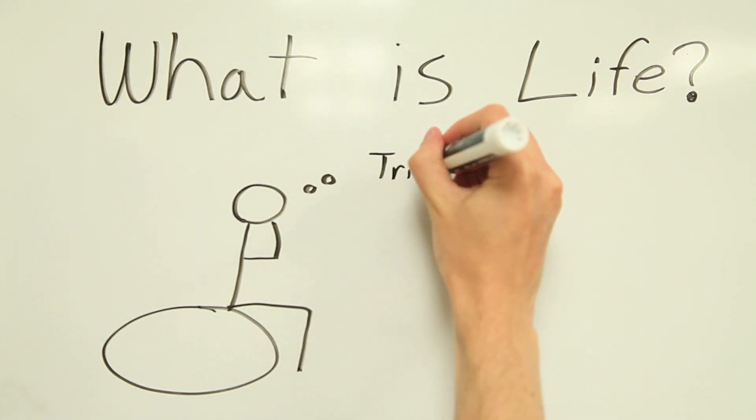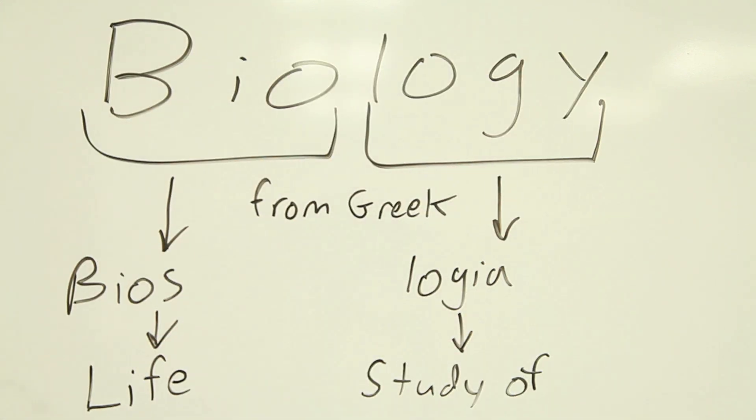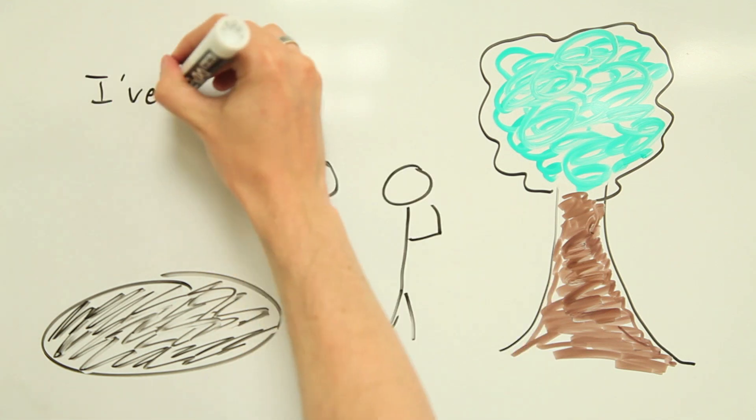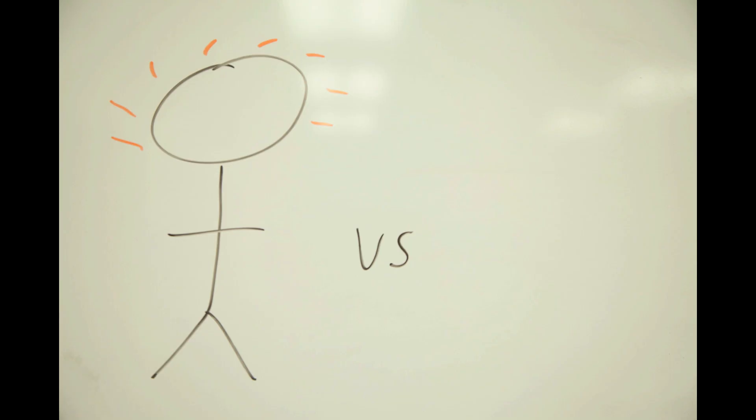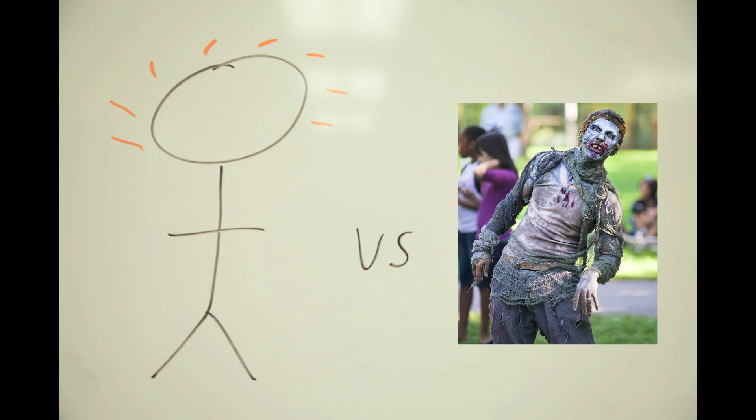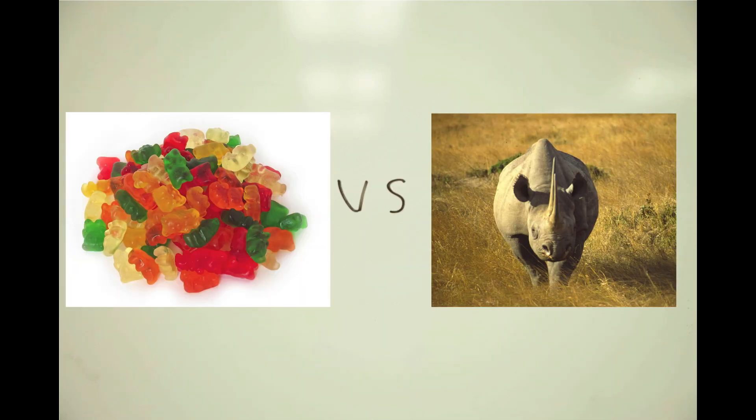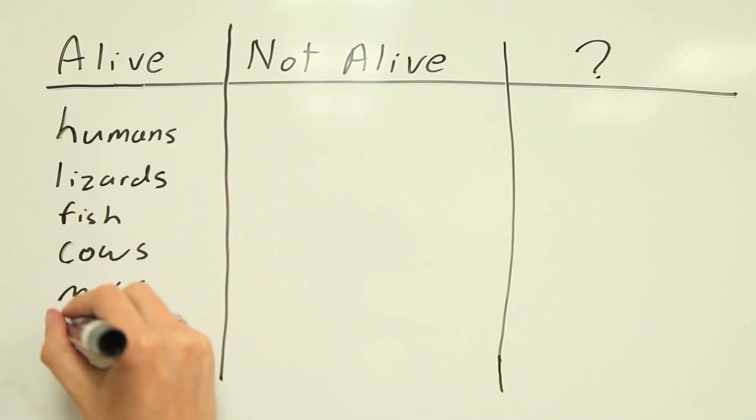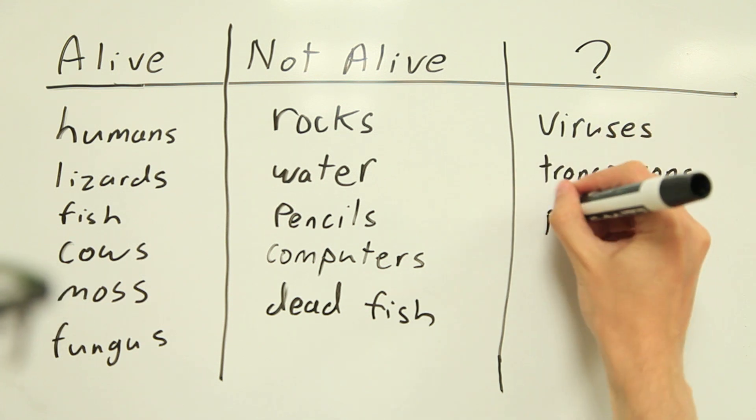What is life? It seems like kind of a simple question, doesn't it? But even in the field of biology, the study of living things, it can get rather tricky to determine what is alive and what isn't. We don't mean the difference between living things and dead things, although that can get pretty complicated, or the difference between a gummy bear and an enraged rhinoceros. This is a much more complicated problem that has become all the more complex as we learn more about molecular biology.